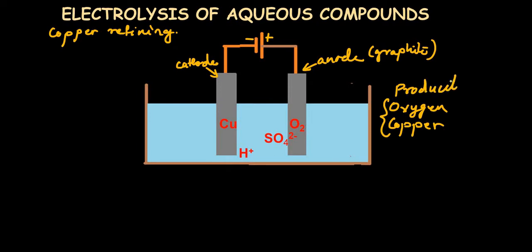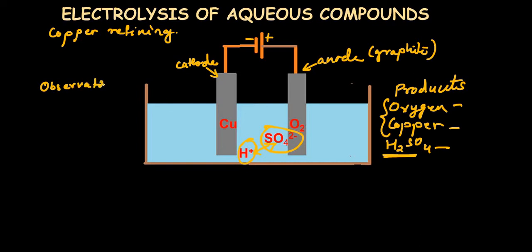So the product at the anode is oxygen and at the cathode is copper metal. Remember this, because there will be a difference when we use a similar process for copper refining. Also, the electrolyte changes to sulfuric acid because the ions remaining in the electrolyte are hydrogen ions and sulfate ions, which together form sulfuric acid.